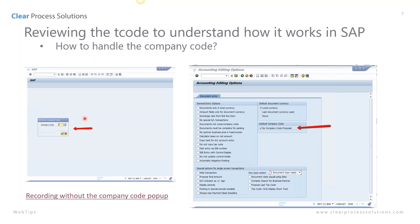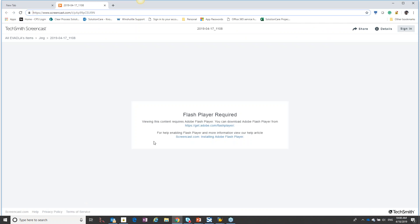If you are dealing with multiple company codes — like one journal entry might be posting to company code 1000 and another one to 2000 — then you need to have the ability to pop that up. Let's take a look at that actual recording so that you can see how that works.